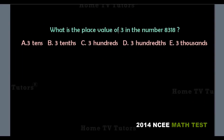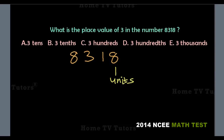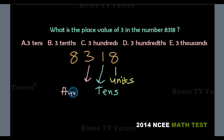What is the place value of 3 in the number 8318? The whole number 8318 has its units placed at the right-hand end of the number. The tens place is next to the unit's place, and the hundreds place is after the tens place. So the place value of 3 is 3 hundreds. The answer option C is the right answer.